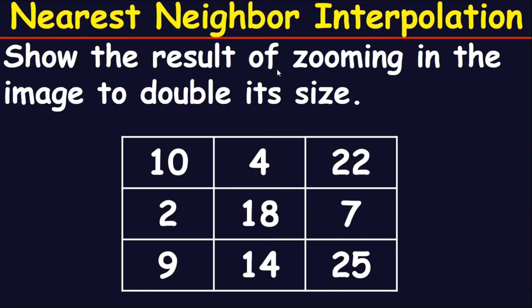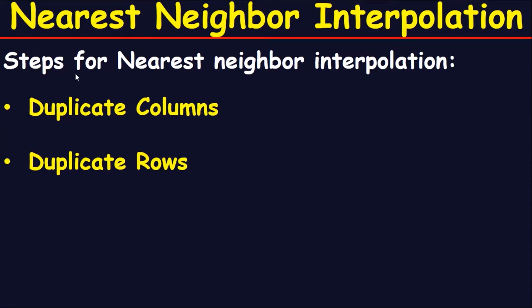This shows the result of zooming in an image to double its size. As you can see, this image is a three by three matrix. When the doubling of size takes place, this matrix will become a six by six matrix — double the size of the original. These are the steps for nearest neighbor interpolation.